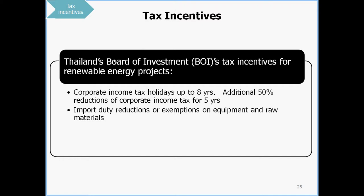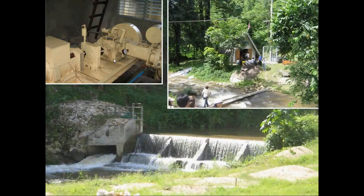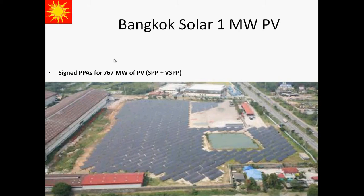Here are some examples of projects that have come online under the Very Small Power Producer program. This is a micro hydro project that was originally an off-grid project and then later connected to the grid. This is a 40 kilowatt project in Chiang Mai that was selling electricity back to the grid — it has the potential to make about 400,000 baht per year worth of electricity. Here's a large-scale solar installation, one megawatt of PV using solar panels made in Thailand.